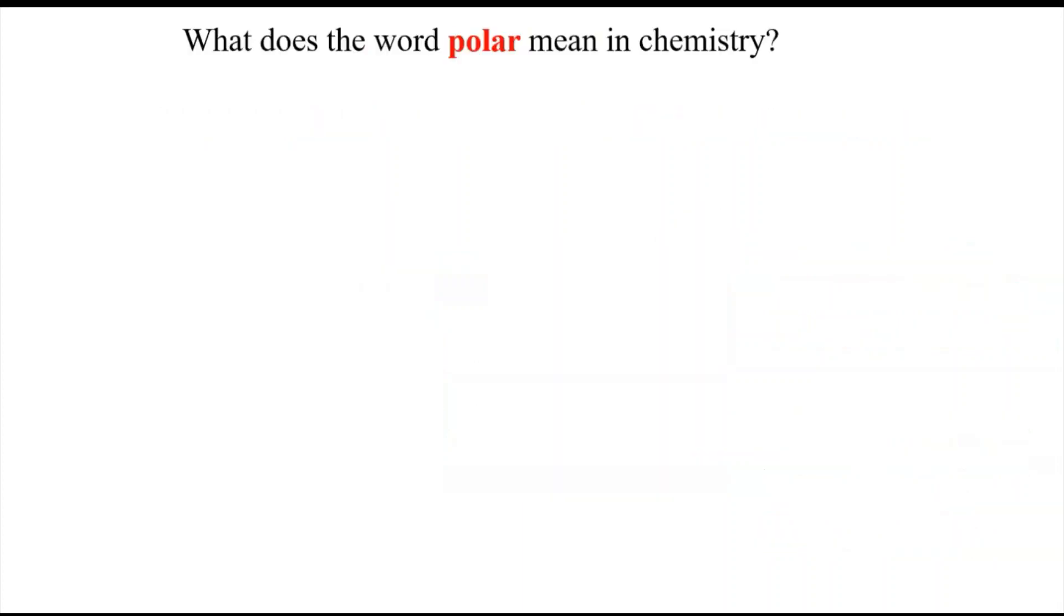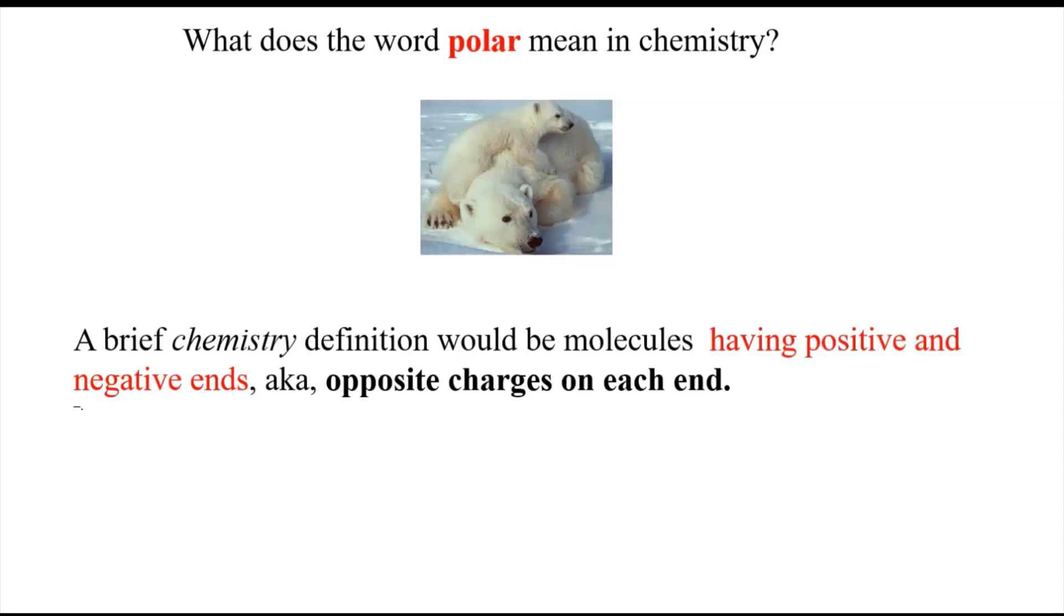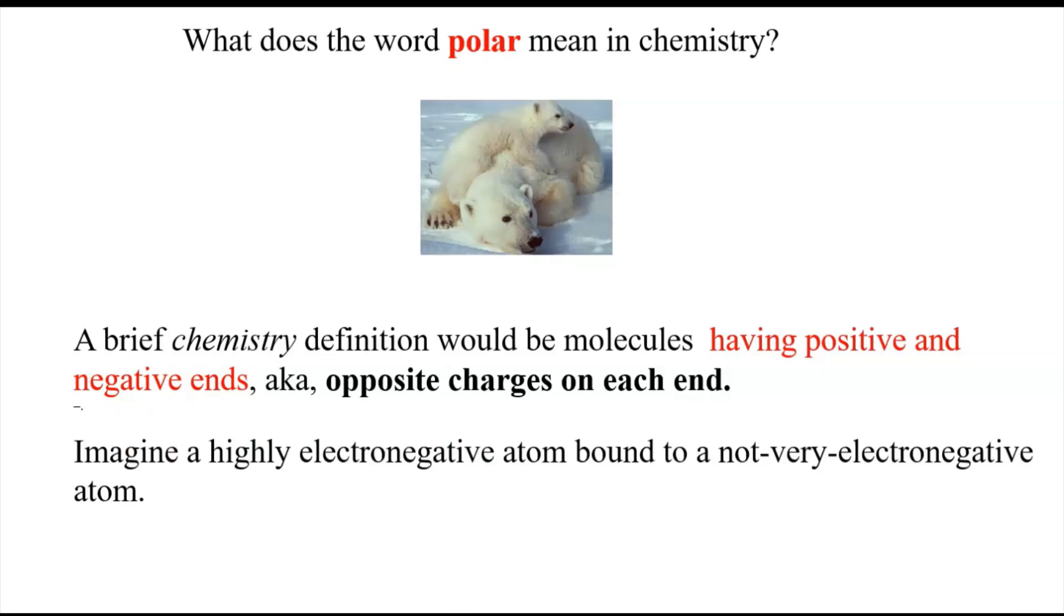So more specifically, what does the word polar mean in chemistry? A brief chemistry definition would be molecules having positive and negative ends, or opposite charges on each end. If you imagine a highly electronegative atom bound to a not very electronegative atom, you can imagine what might happen.